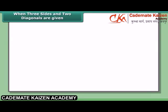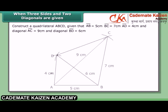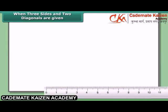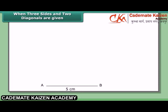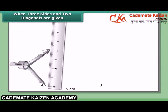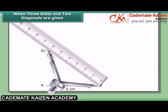When three sides and diagonals are given, construct quadrilateral ABCD given AB = 5 cm, BC = 7 cm, AD = 4 cm, diagonal AC = 9 cm, and diagonal BD = 6 cm. Steps: Draw AB = 5 cm. With A and B as centers and radii 4 cm and 6 cm respectively, draw arcs to cut each other at point D.